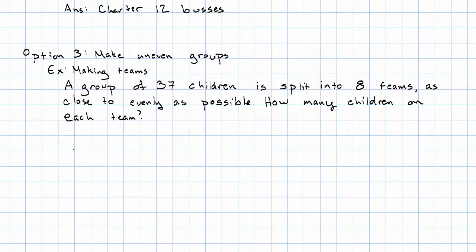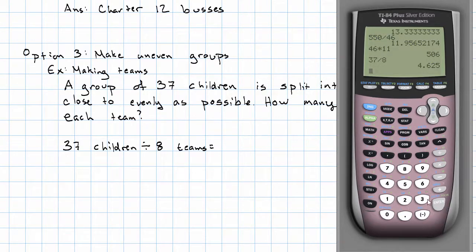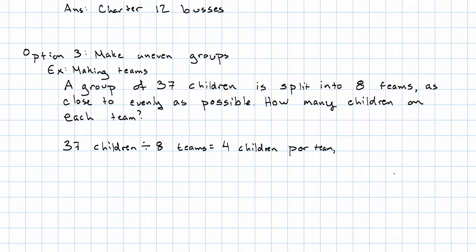So we take 37 children divided by 8 teams, right? 37 divided by 8 is, well, we'll have 4 children per team. And here it does matter how many are left over. So we need to actually work that out. 8 into 37 goes 4 times, right? That's the 4 the calculator gave us. 4 times 8 is 32. We'll have 5 left over.